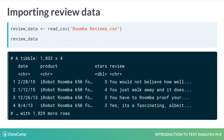You can see that there are 1,833 rows. You can also see that there are four columns: the date the review was written, the product being reviewed, the star rating each reviewer gave the product, and the review itself.